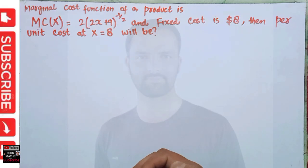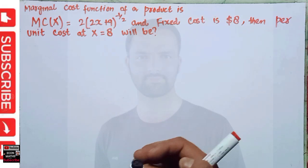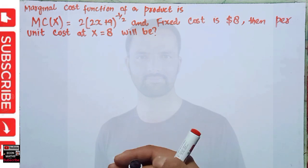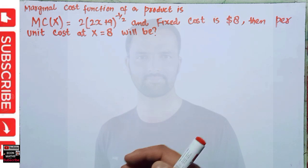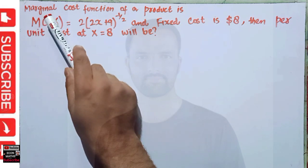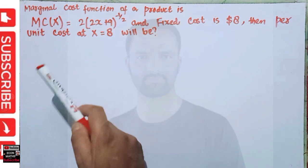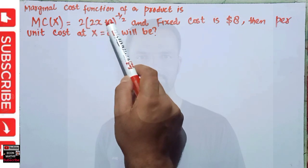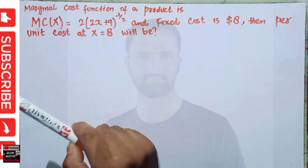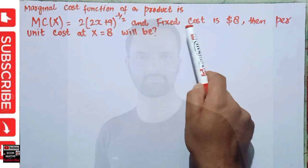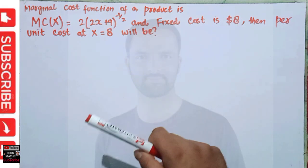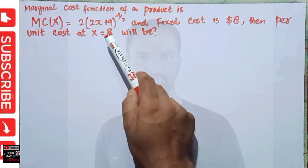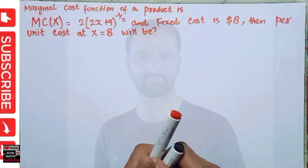Hi, this is Halal. In this video on the mathematical economics series, we will try to solve a problem asked by a friend on YouTube, namely Palak Srivastav. The question is: the marginal cost function of a product is given by MC = 2(2x + 9)^(-1/2), where x is the quantity and the fixed cost is 4 dollars. We have to find the per unit cost when x = 8.